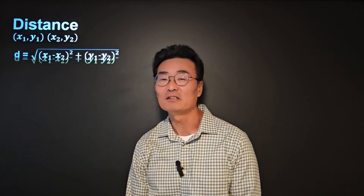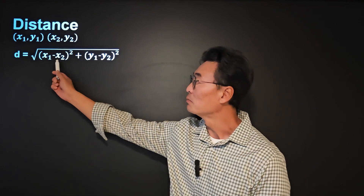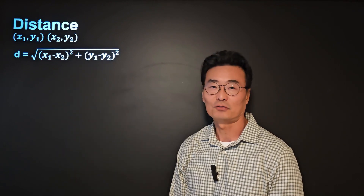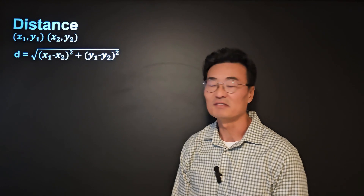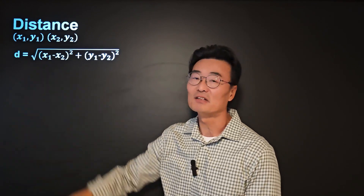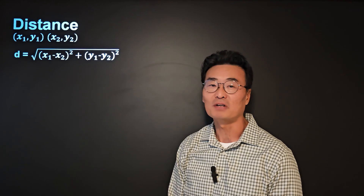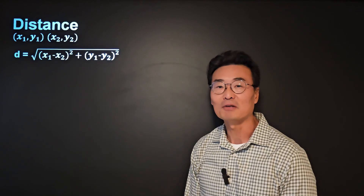Here's how you find the distance between two points. Given (x1, y1) as the first point and (x2, y2) as the second point, the distance formula is the square root of (x1 minus x2) quantity squared plus (y1 minus y2) quantity squared. What's important to note is that it doesn't have to be x1 minus x2 — it could be x2 minus x1, and similarly y2 minus y1. The order doesn't matter when finding the distance inside the square root.